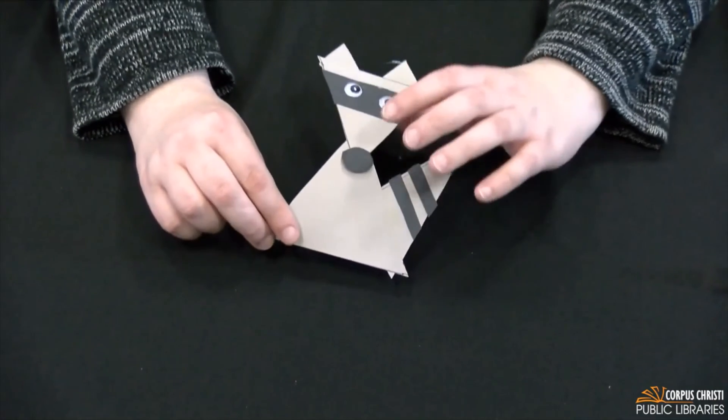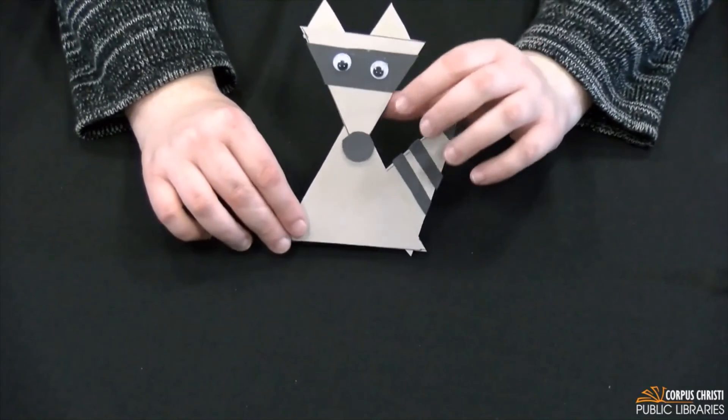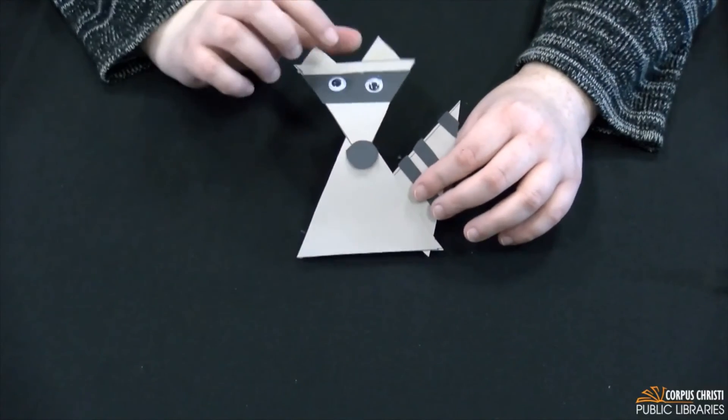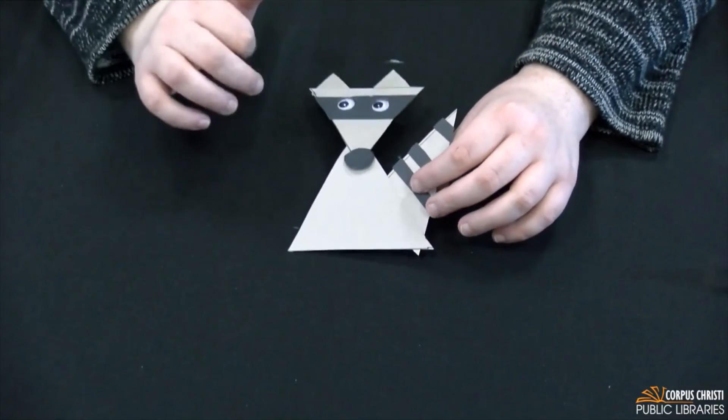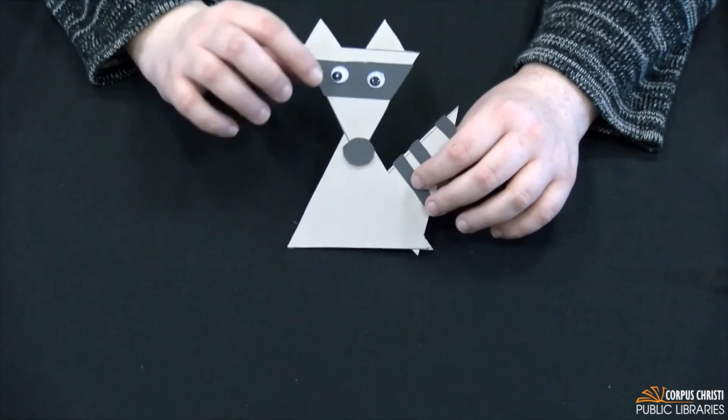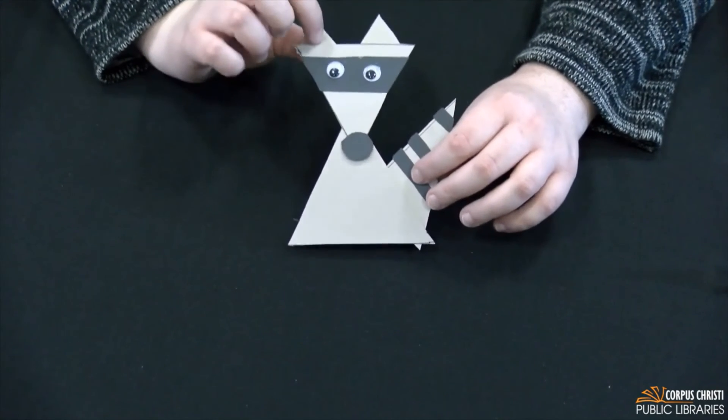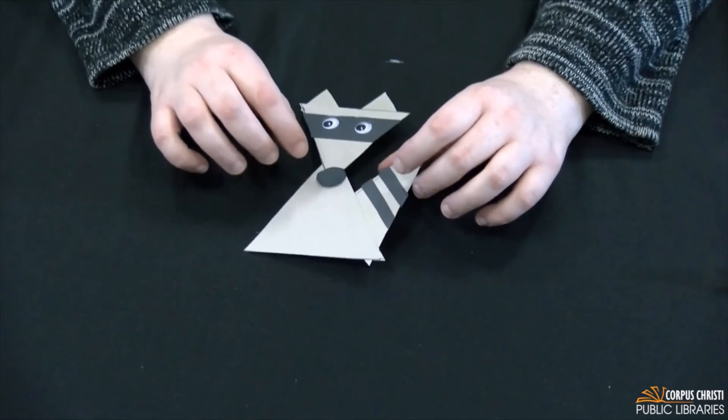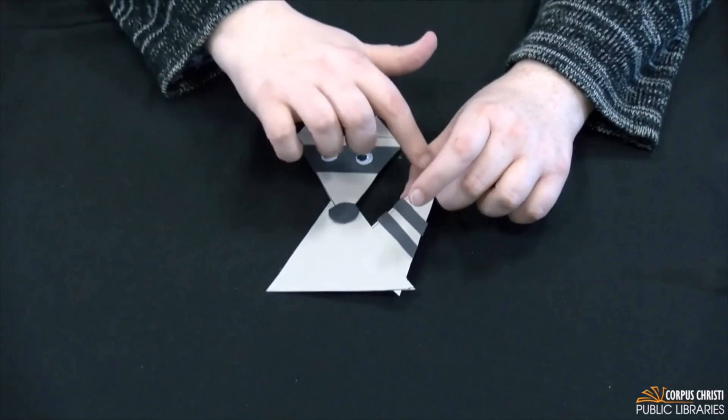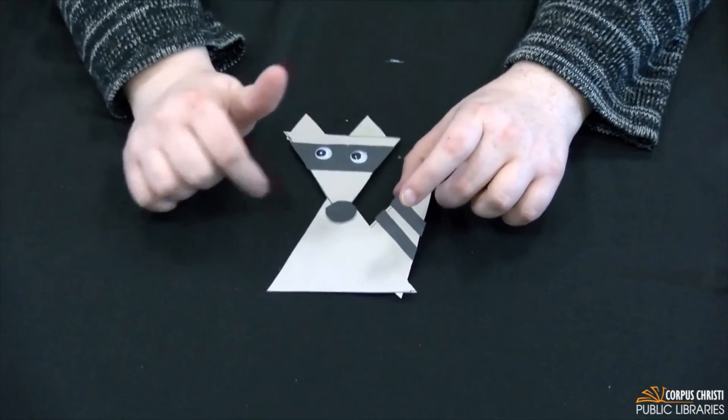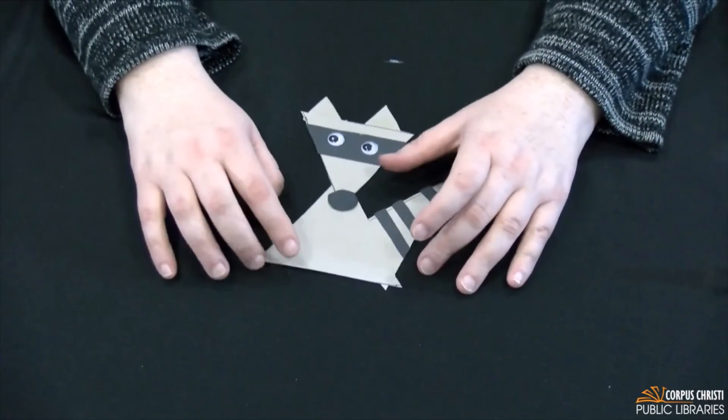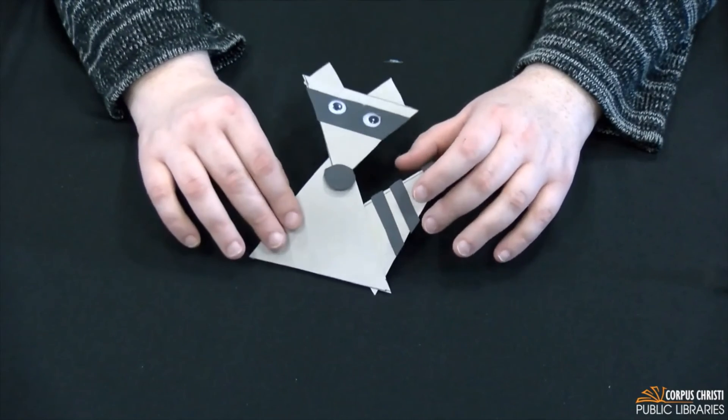And there we go, my simple shape raccoon is done. Again, a great craft for young children to talk with them about shapes. You can always count the shapes. I have five triangles here: one, two, three, four, five. Four squares: one, two, three, four. And one circle, three if you count the eyes. So great way to have fun with a craft and also talk with young children about shapes.